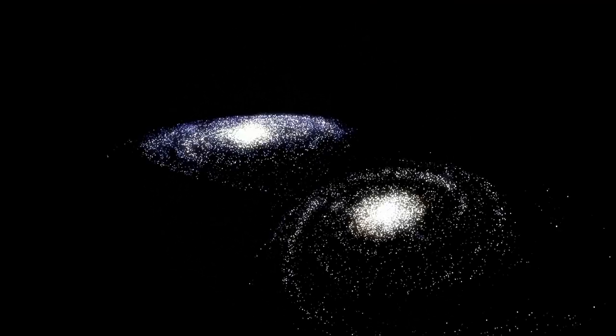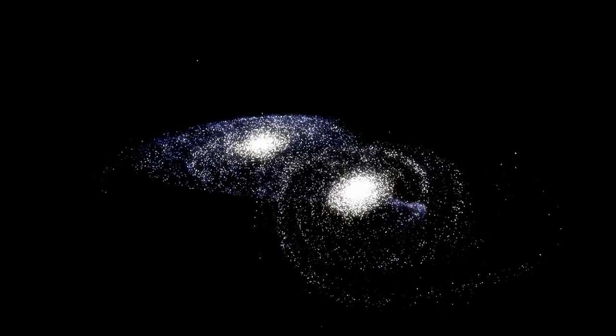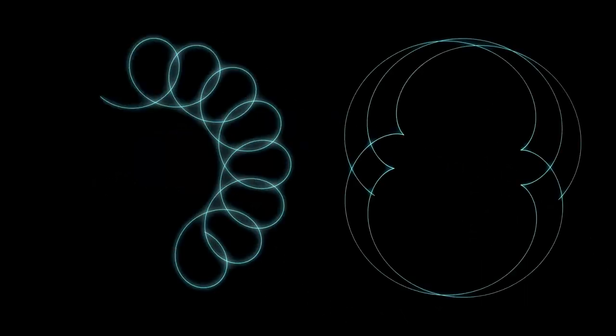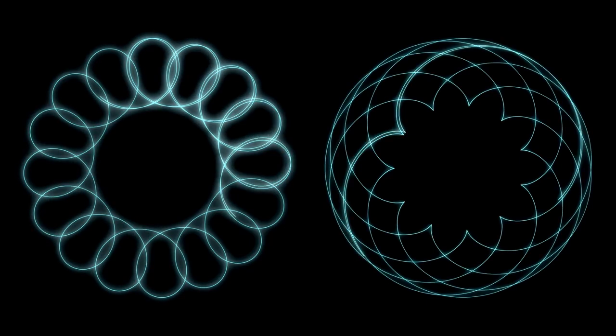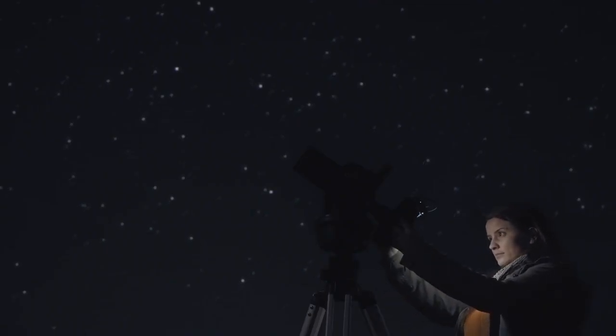When astronomers studied the spectral fingerprints of these galaxies, the light that reveals which elements they contain, they were hit with an even greater shock. These galaxies contained oxygen, carbon, even iron, heavy elements that shouldn't have existed yet because these don't appear out of nowhere. They're forged in the hearts of massive stars and released only after supernova explosions. First-generation stars burn hydrogen and helium, then die, scattering their contents. Later generations are born enriched with heavier elements. That sequence should have taken hundreds of millions, if not billions, of years. Yet here were galaxies, less than 400 million years after the Big Bang, already showing signs of multiple stellar generations.